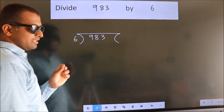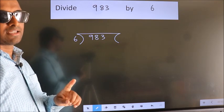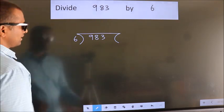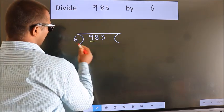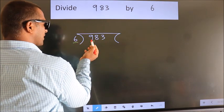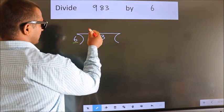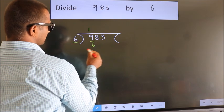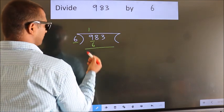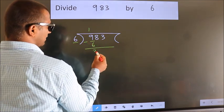This is your step 1. Next, here we have 9, here 6. A number close to 9 in the 6 table is 6 once, which is 6. Now we should subtract. We get 3.